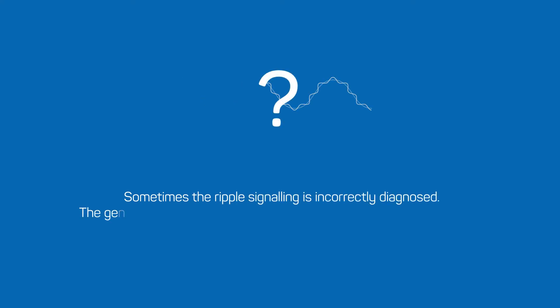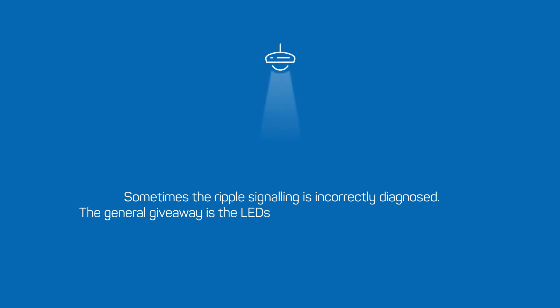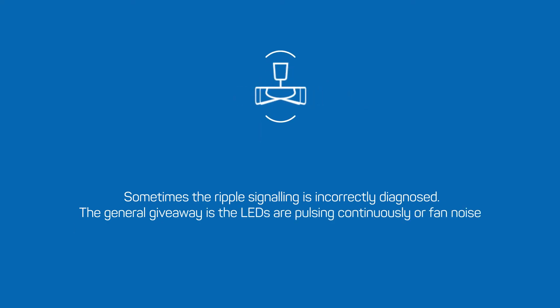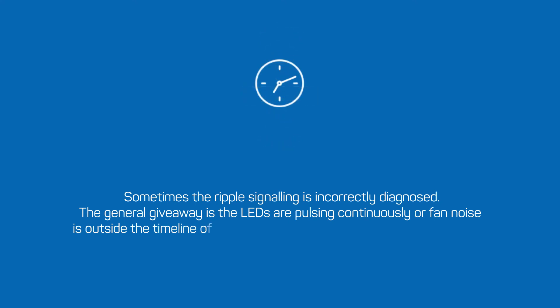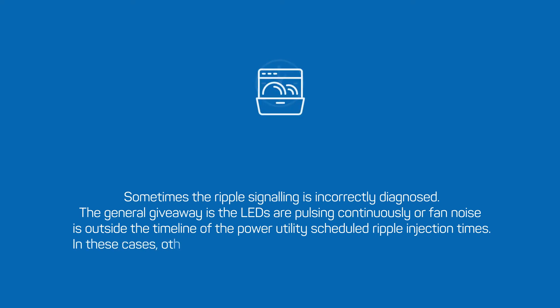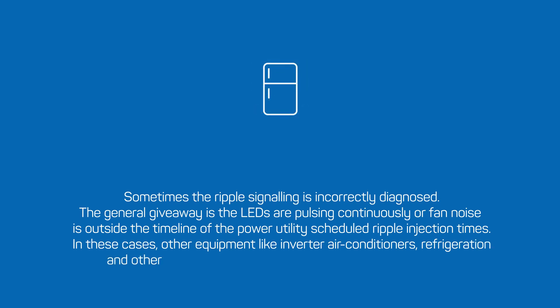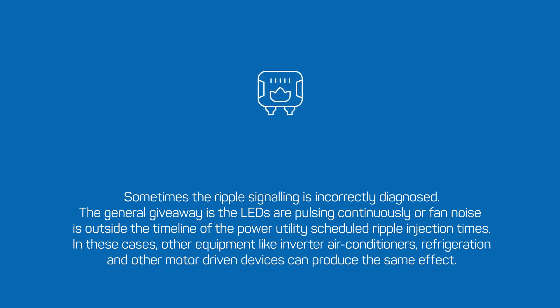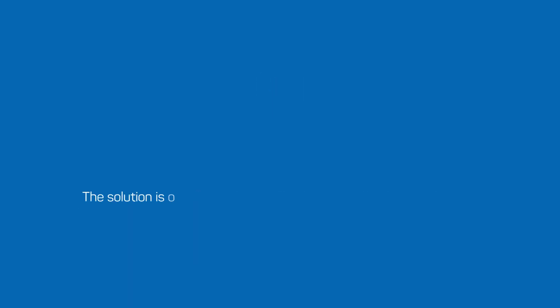Sometimes the ripple signaling is incorrectly diagnosed. The general giveaway is that the LEDs are pulsing continuously or fan noise is outside the timeline of the power utility's scheduled ripple injection times. In these cases, other equipment like inverter air conditioners, refrigeration and other motor driven devices can produce the same effect. The solution is our main surge and active filter products.